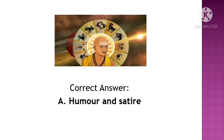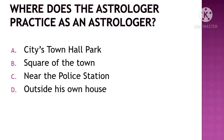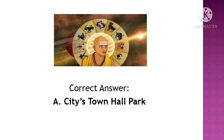Next question: Where does the astrologer practice as an astrologer? The options are: A. The city town hall park, B. Square of the town, C. Near the police station, D. Outside his own house. The correct option is Option A, city town hall park.